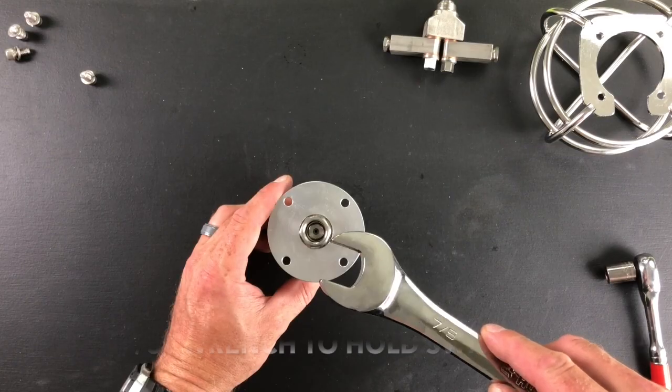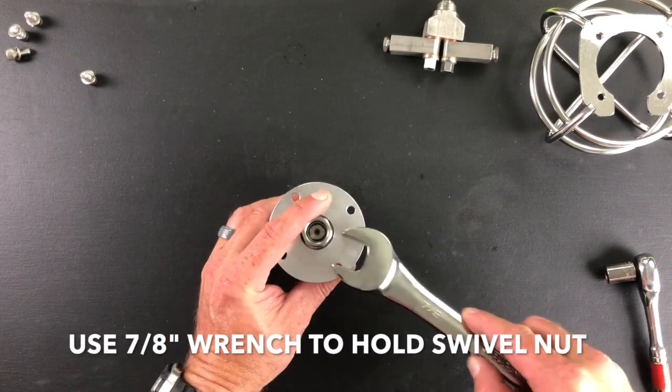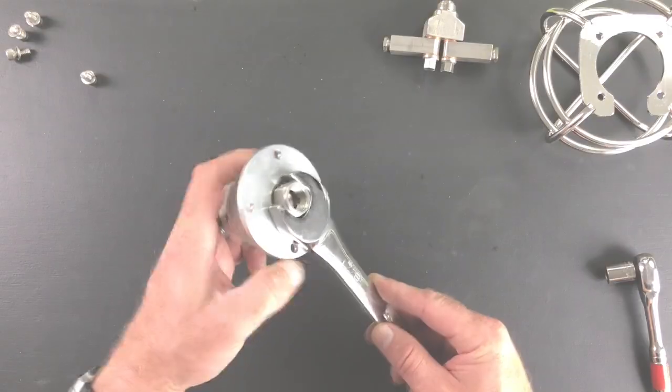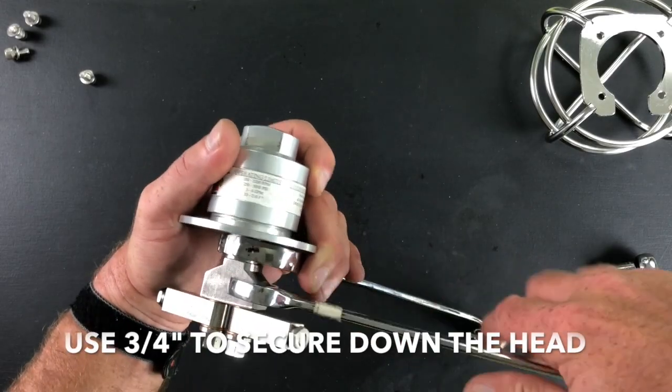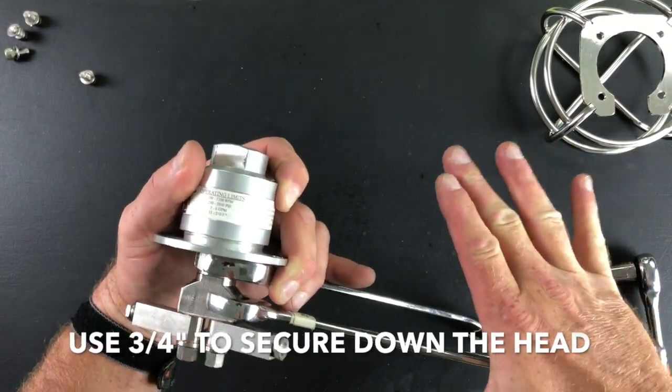Step five, reinstalling the high pressure spray head. Use seven inch wrench to hold the swivel nut in place. Hand thread the swivel head on as tight as you can go. Use the 3/4 inch wrench to secure down the head.